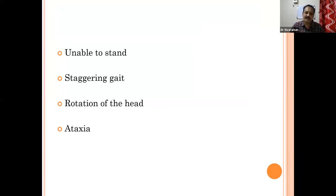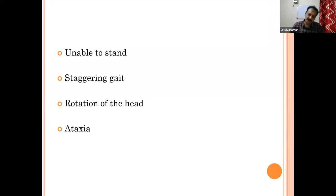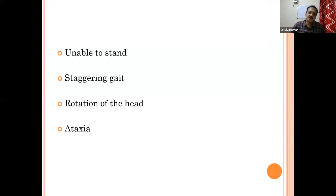The classical sign is the rotation of the head. The animal will be rotating the head 360 degrees. That is due to the increase in intracranial pressure. The animal cannot maintain its posture. If you have a typical rotation of the head, in the day-old animal, that is the key sign.